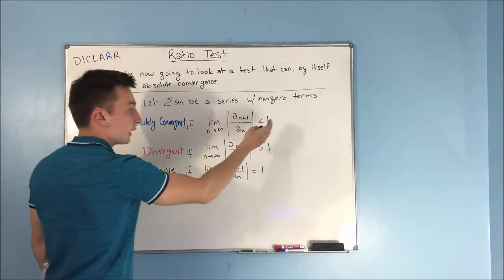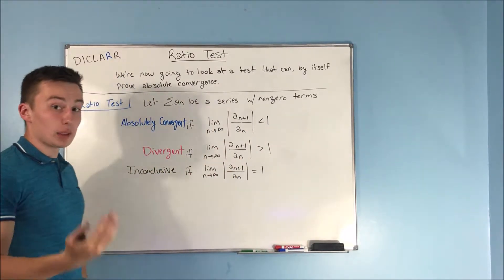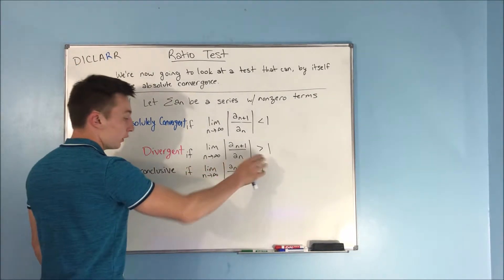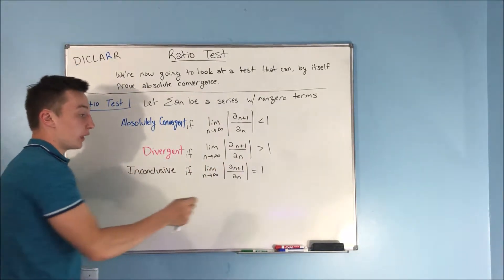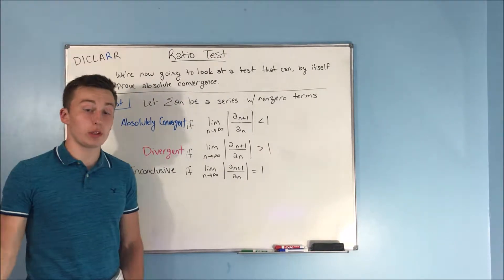If it's less than one, then you know that that series is absolutely convergent. If it's greater than one, it's divergent. If it equals one, then your test is inconclusive and you need to move on to a different test.